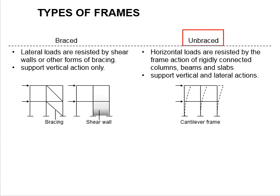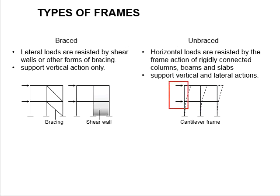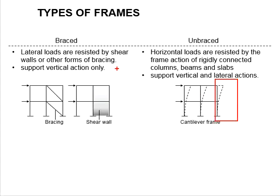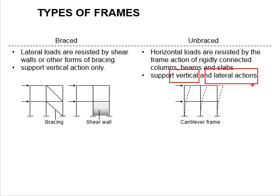However, for the unbraced frame, there are no designated elements to carry the horizontal load. In this case, the horizontal load will be resisted by the frame actions based on the rigidity of the connections between the columns, beams, and slabs. Under such circumstances, the columns will behave as cantilever members and the rigidity of the joints between the columns and beams will help to improve the lateral resistance capability of the frame structures. Simply put, the unbraced frame will need to carry the vertical and lateral loads at the same time.